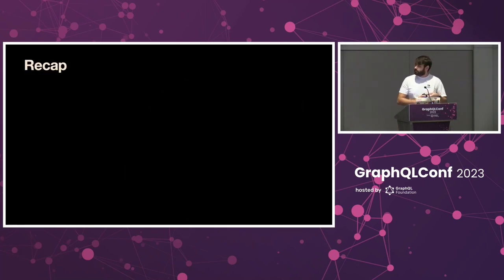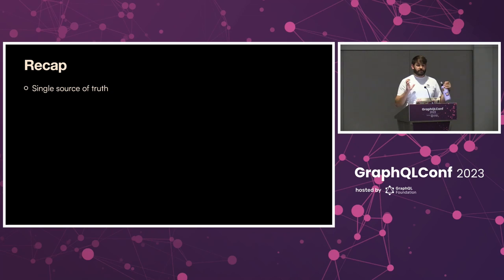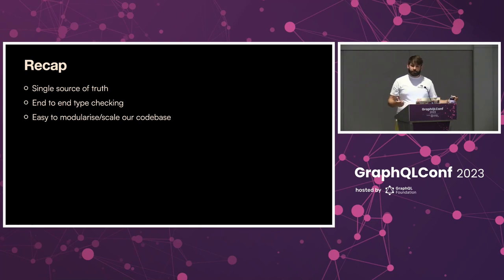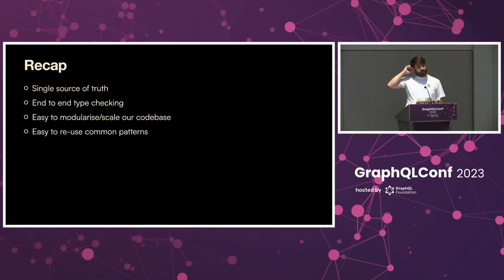To recap the benefits we've seen so far: you have one single source of truth — just code to define your schema. You can do end-to-end type checking without installing additional tools. It's very easy to modularize and scale your codebase, which is a problem already solved by Python. And by using generic types, or creating custom functions, you can reuse common patterns easily in your GraphQL schema.